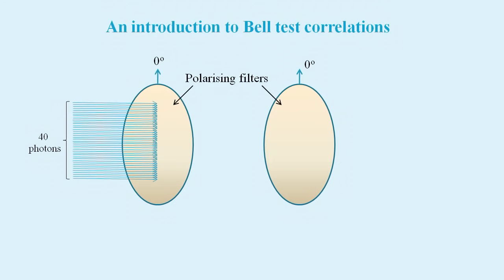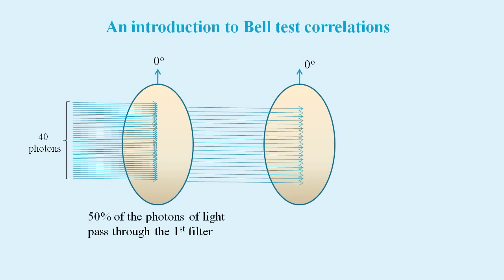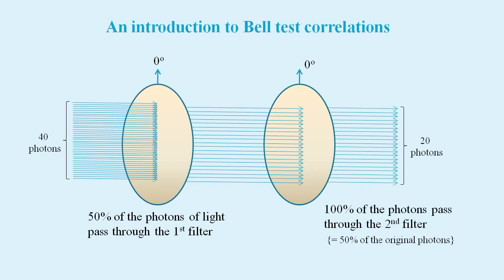By way of introduction to Bell test correlations, consider some photons passing through two polarizing filters. Half the photons pass through the first filter. And when both filters are in alignment, all the photons that pass through the first filter also pass through the second.